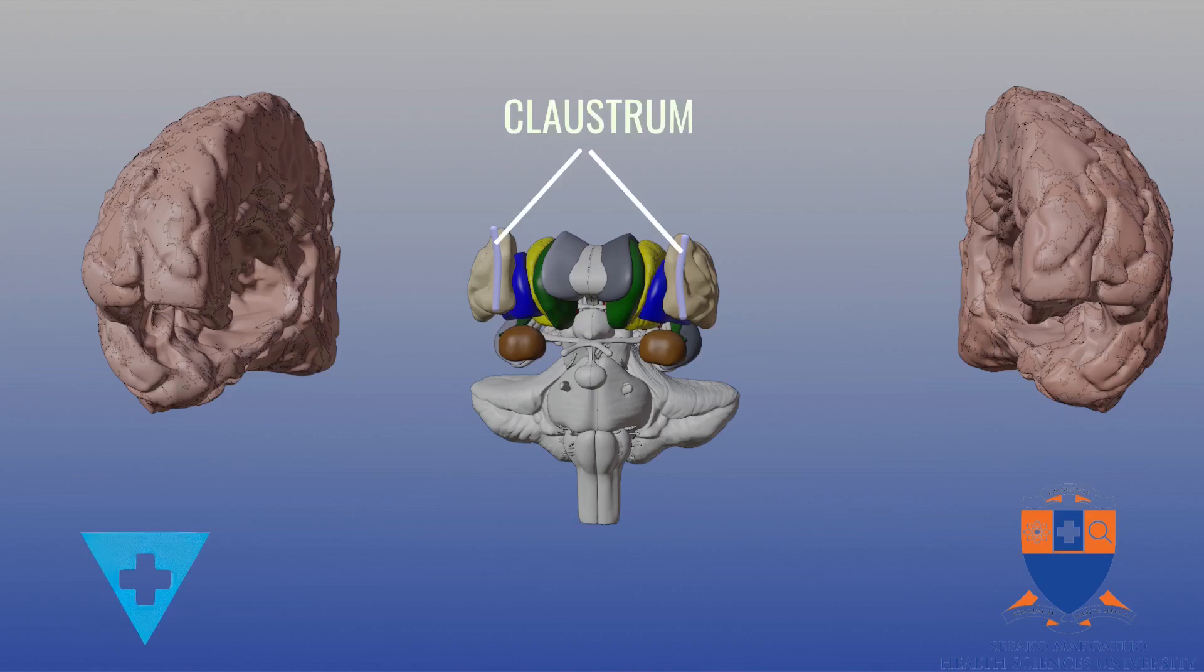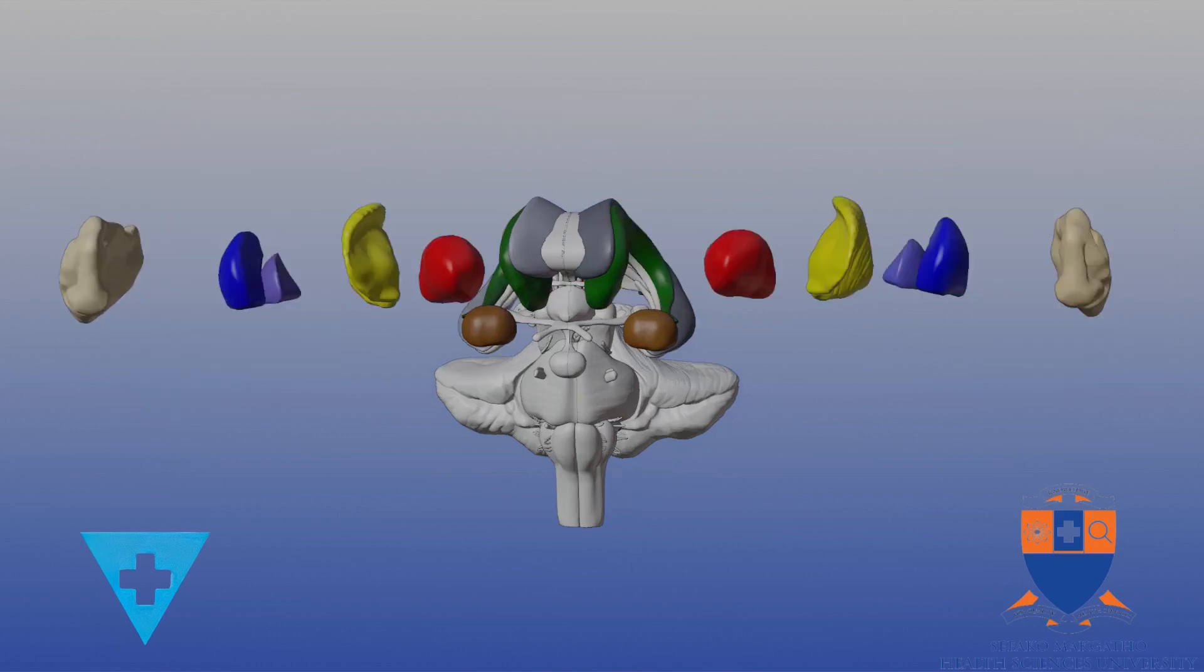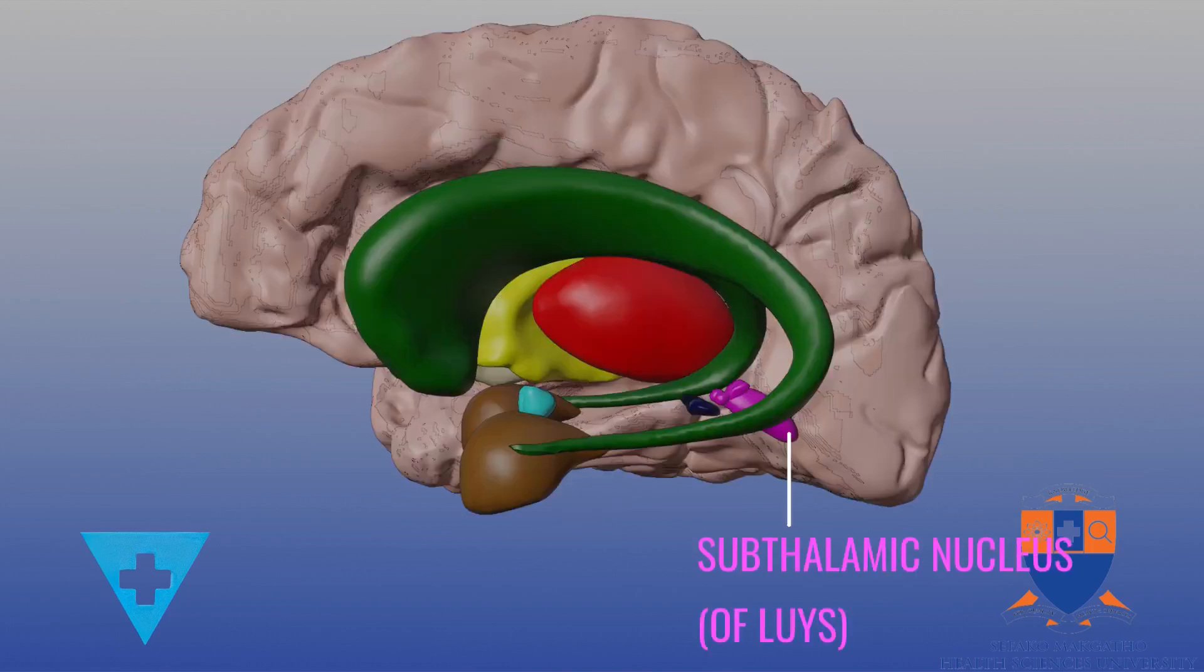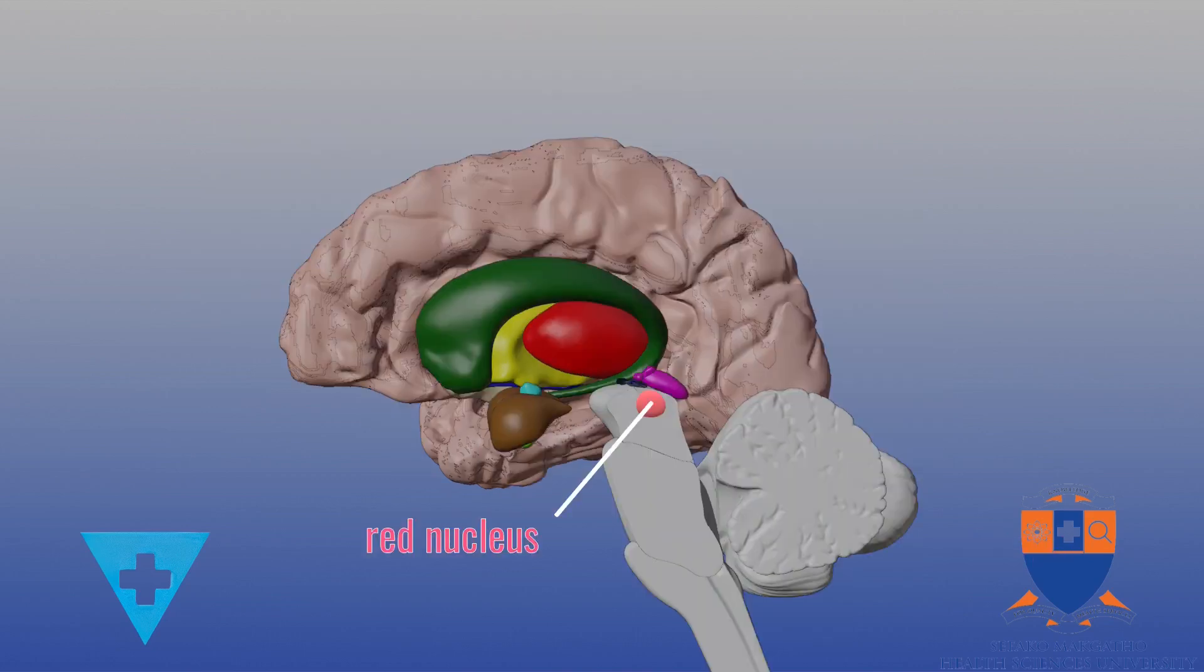Lastly we will be discussing the claustrum. The lentiform nucleus is medial to this narrow gray matter plate between the extreme and the external capsules. The subcortical or primitive motor regions are the subthalamic nucleus of Luys in the diencephalon, the red nucleus and substantia nigra in the midbrain and the reticular formation.